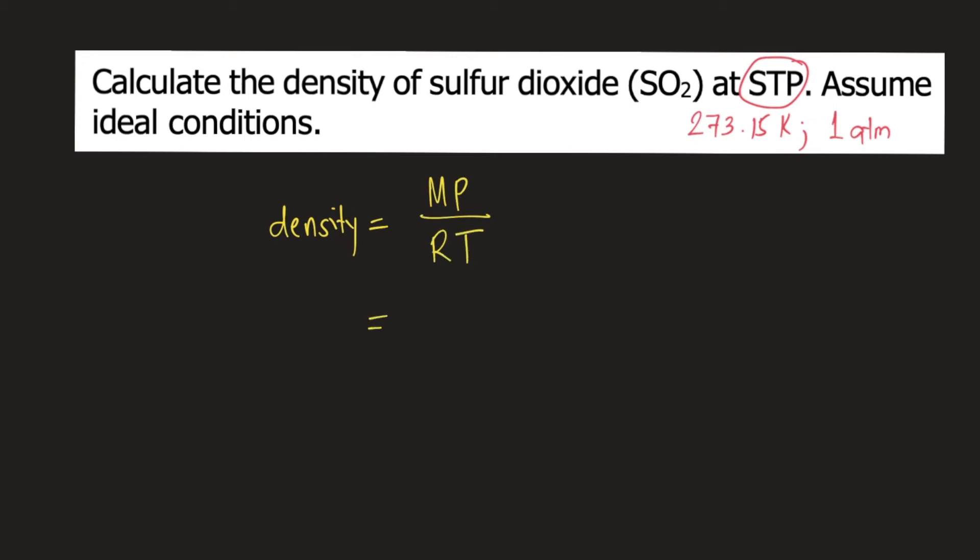Capital M is the molar mass of the gas. In our problem, our gas is SO2, and the molar mass of SO2 is 64.07 grams per mole.